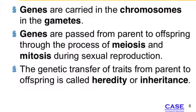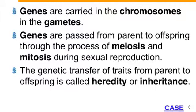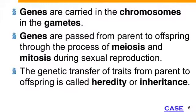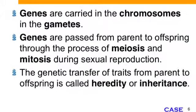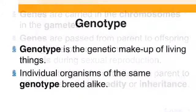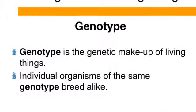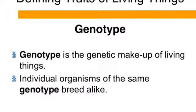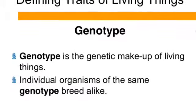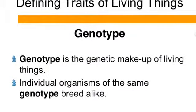Genotype is the genetic makeup of living things. Individual organisms of the same genotype breed alike. For example, a German shepherd bred with a German shepherd produces a German shepherd.